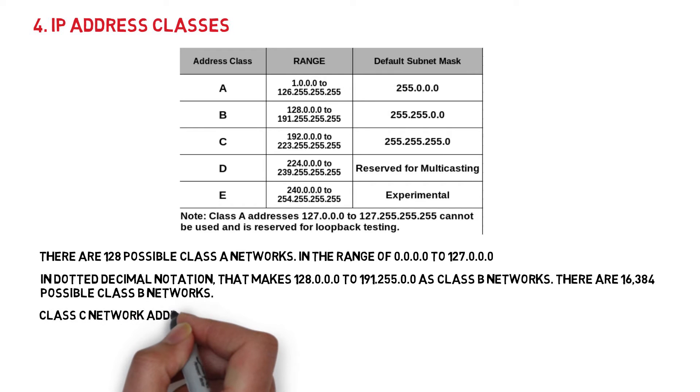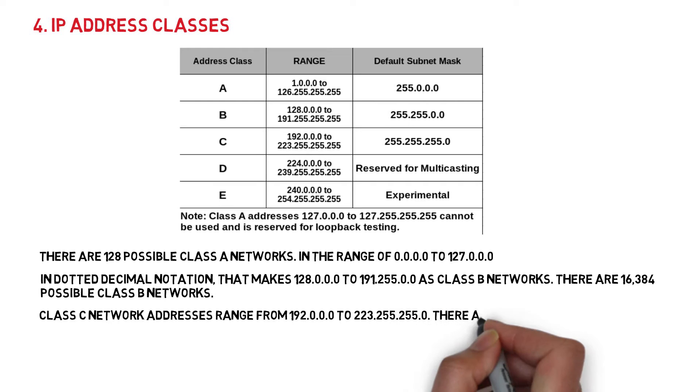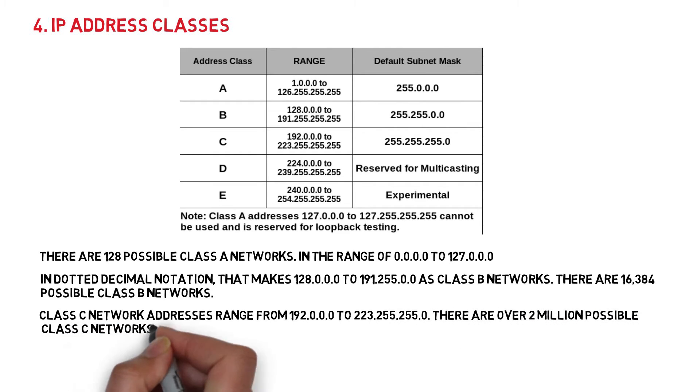Class C network addresses range from 192.0.0.0 to 223.255.255.0. There are over 2 million possible Class C networks.